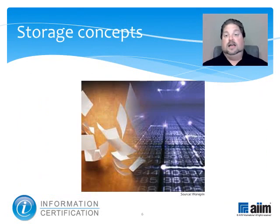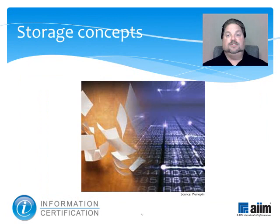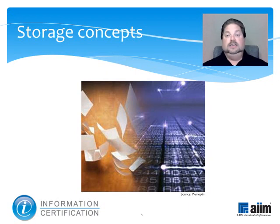Storage differs from archives in the same way a dresser drawer differs from a safety deposit box — put away yet readily retrievable versus socked away for protection. Technologically, computer storage is the place where data is held in an electromagnetic or optical form accessed by a computer processor. It comes in three basic forms: online, including hard drives and mounted removable media; near-line, including unmounted removable media; and offline, including media storage somewhere else like the data center or off-site.